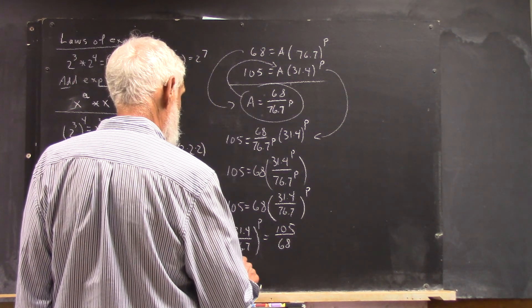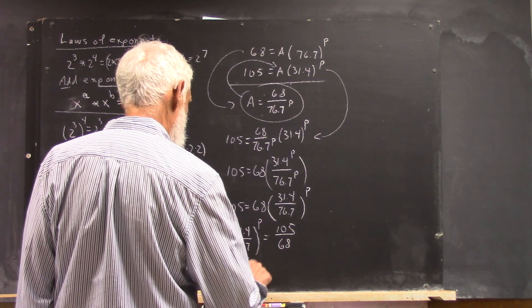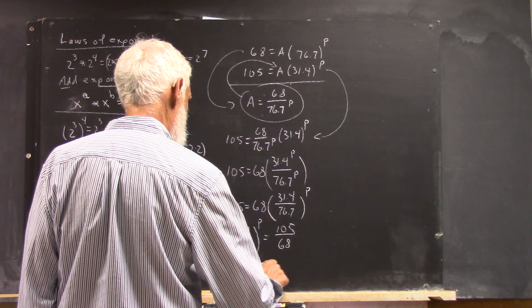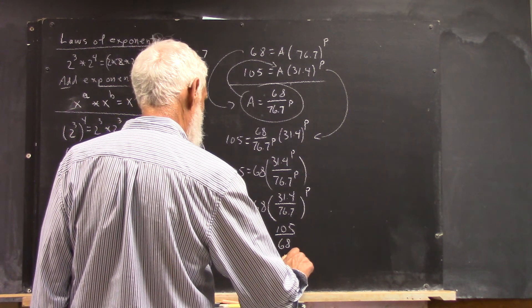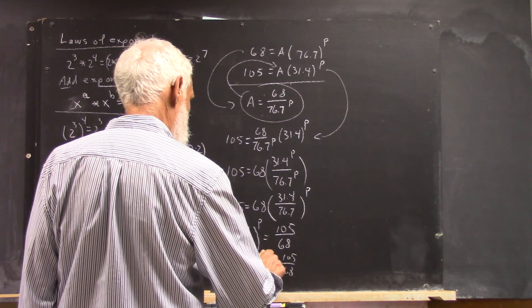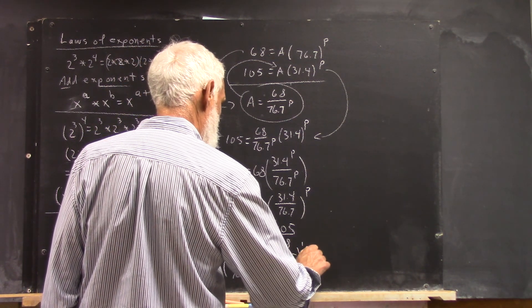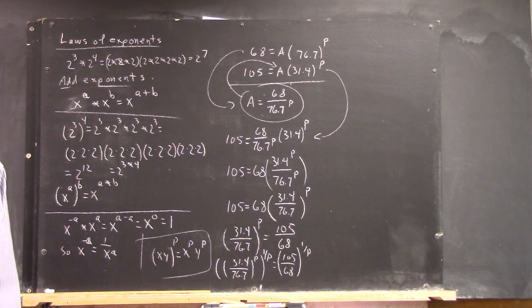But this gives us 31.4 over 76.7 to the P. Again, equals 105 over 68. Well, if I raise this to the 1 over P power, and raise this to the 1 over P power, what happens?